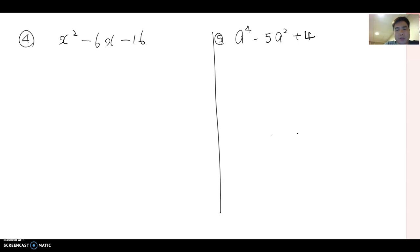Let's continue trinomial factoring. So number 4, x squared minus 6x minus 16.